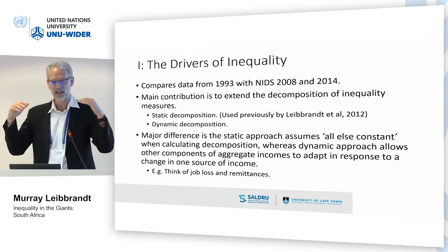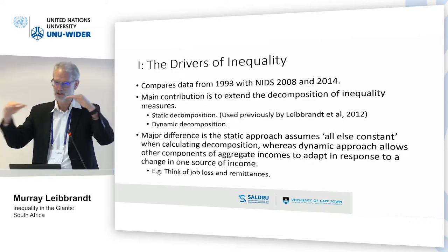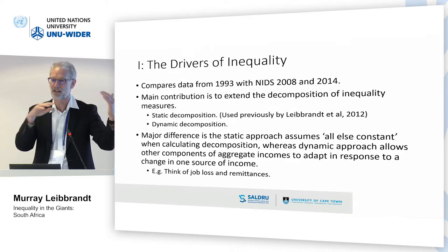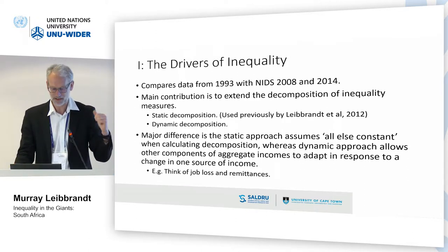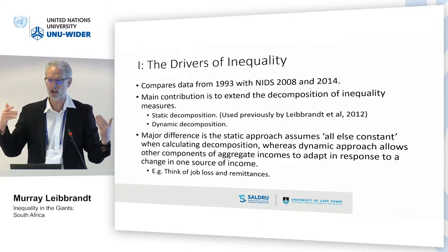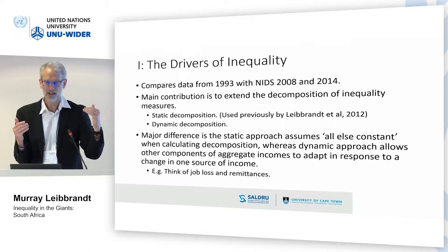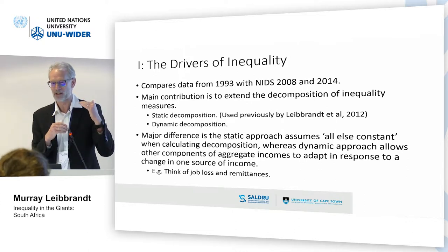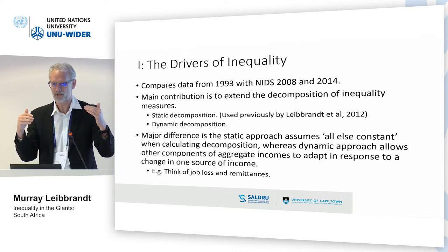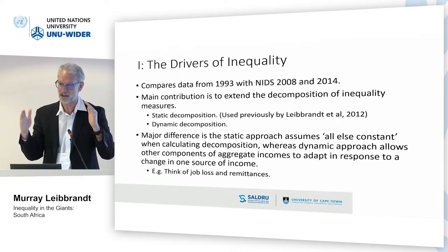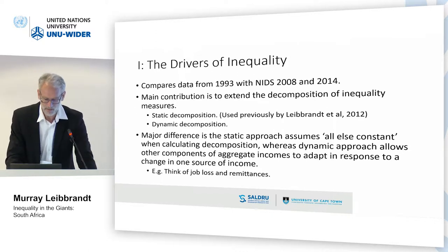For example, South Africa has implemented a huge cash transfer system over the post-apartheid period. If you take a cross section and do an income source decomposition, you're never going to pick up the impact of that because it's embedded in the data. The dynamic decompositions help in that regard. They also allow you to bring in demographic change, because the denominator in these exercises is household size, which you can decompose into the share of adults and the share of employed adults in the household. But then you've got an underperforming labor market.